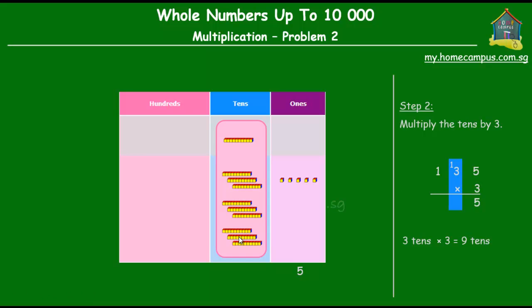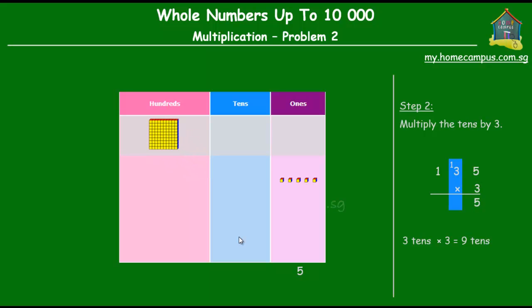Now we know that 10 tens make 100. So we regroup the tens — we take all 10 tens and regroup that into a 100 and put it in the hundreds column. In the working, we have 9 tens from multiplication and 1 ten from the previous step, giving us 10 tens altogether. 10 tens equals 100, which means 0 in the tens column and 1 carried to the hundreds column.